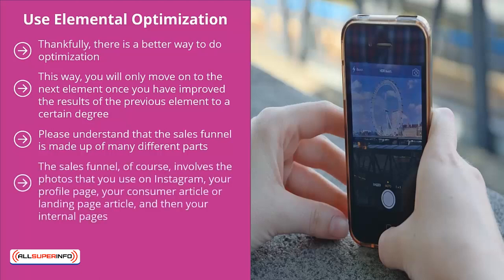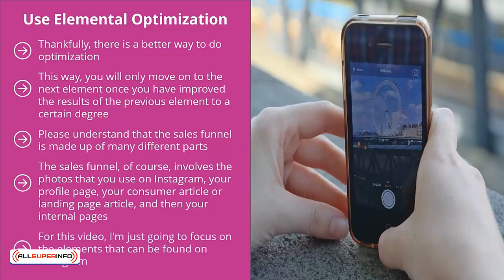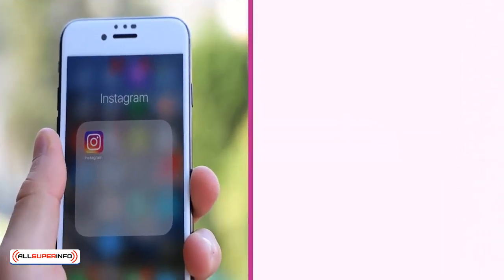Please understand that the sales funnel is made up of many different parts. Each of these have different elements, but they can all be broken down into some common elements. The sales funnel involves the photos that you use on Instagram, your profile page, your consumer article or landing page article, and then your internal pages. Each of these has to be optimized, and each has separate elements within it. For this video, I'm just going to focus on the elements that can be found on Instagram. You can use the same element-by-element analysis to optimize your squeeze page, your consumer guide page, and other elements on your own website.